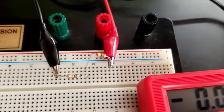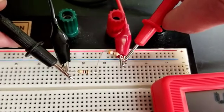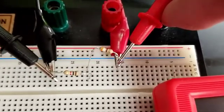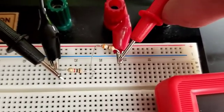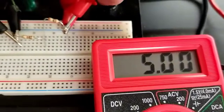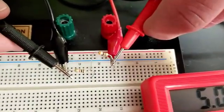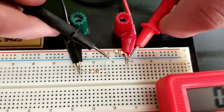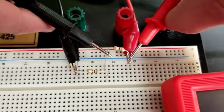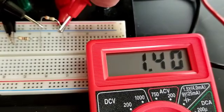Now to measure the voltage drop on each individual resistor, for resistor one, you would touch the lead to the front and the opposite lead to the back, and it reads 1.40 volts.